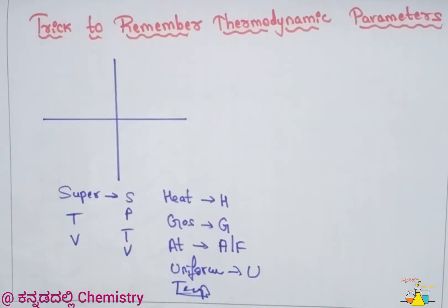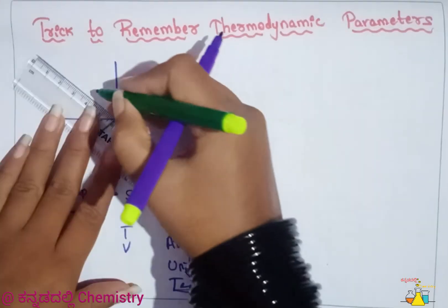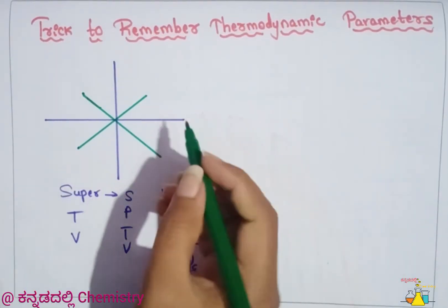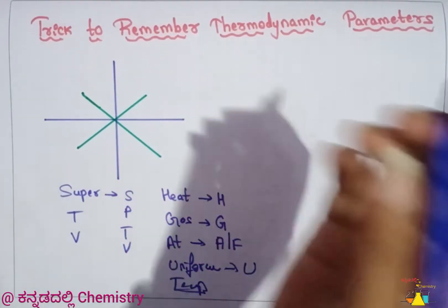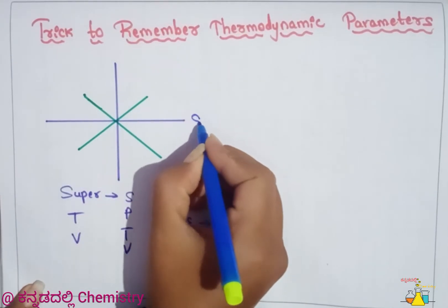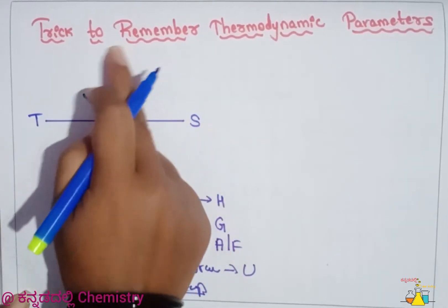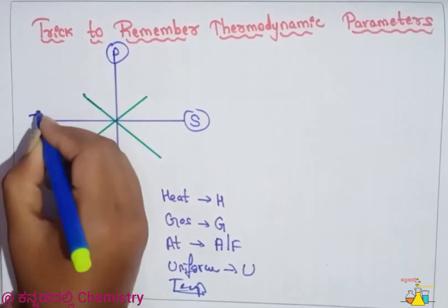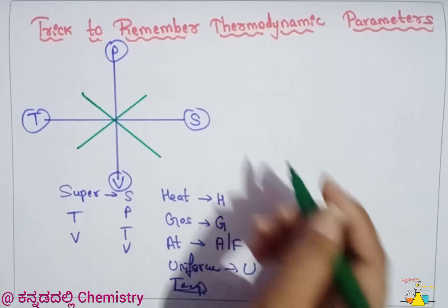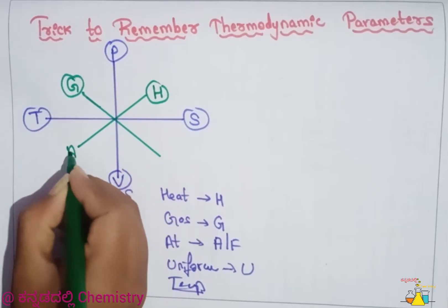Using a 4-quadrant coordinate system, the SPTV order gives us 4 Maxwell relationships. The corresponding thermodynamic potentials in order are H, G, A, U.